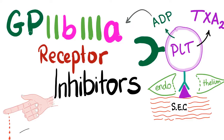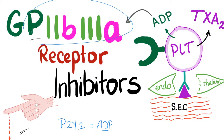Hey guys, it's Medicosis Perfectionellis and this is our series of lectures about bleeding and coagulation disorders. In the previous video, we talked about the P2Y12 receptor inhibitors, also known as ADP receptor antagonists. In this video, we'll talk about the GP2B3A receptor inhibitors, which inhibit platelet aggregation and prevent thrombosis. Now let's get started.